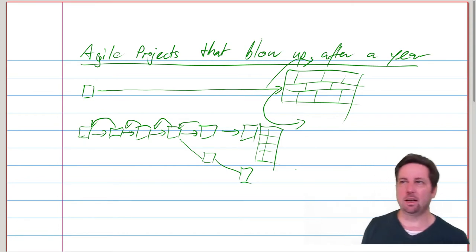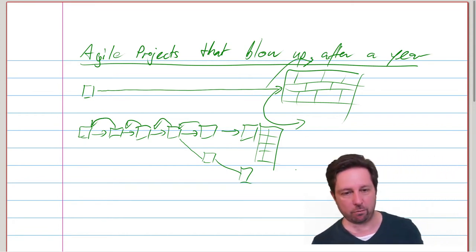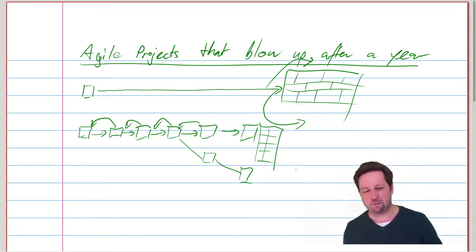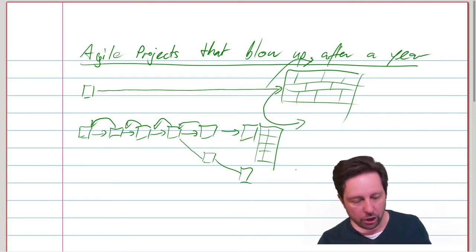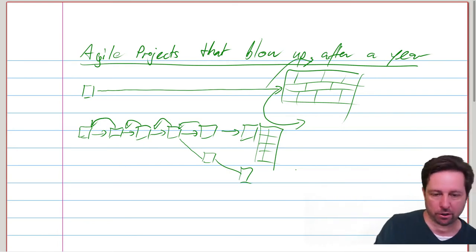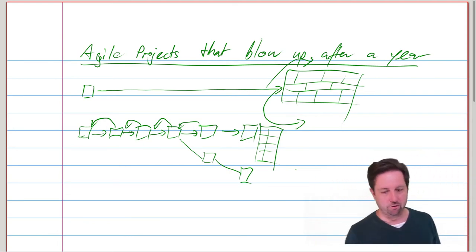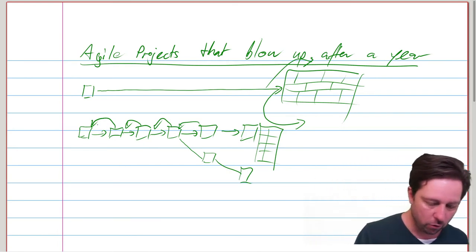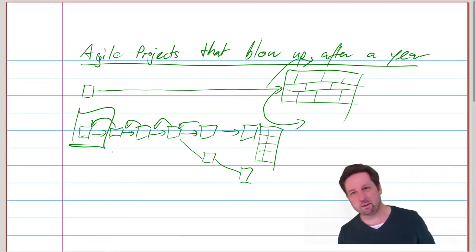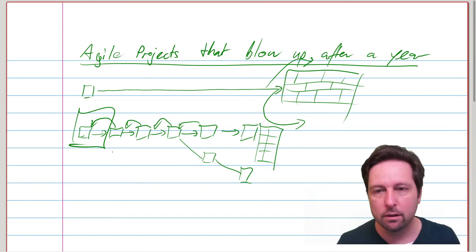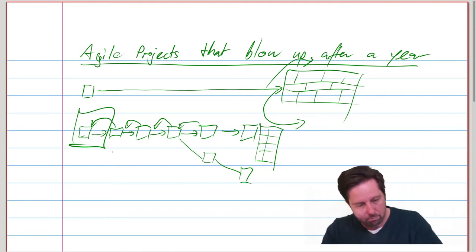And this happens especially in large organizations, it seems to me, just because they have so much organizational knowledge and tradition around waterfall projects, straight line projects, that even if they then go and build iterations, they still make those iterations go in a straight line and they hit that proverbial brick wall.